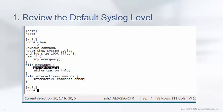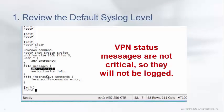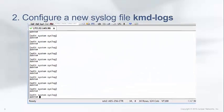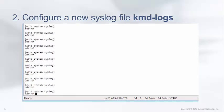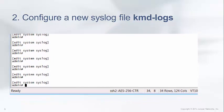The problem is that VPN status messages are written at the info level. Since they aren't critical, if your configuration is using the default syslog config, VPN status messages will not be logged. This leads us to the objective of this video, which is to configure a new syslog file named KMD logs to capture VPN status messages.